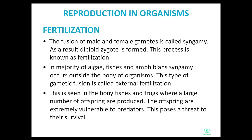The fusion of male and female gametes is called syngamy. As a result, a diploid zygote is formed. Since gametes are haploid (n), when the male gamete (n) and female gamete (n) fuse, n plus n gives 2n — so the zygote is diploid. This process is known as fertilization.